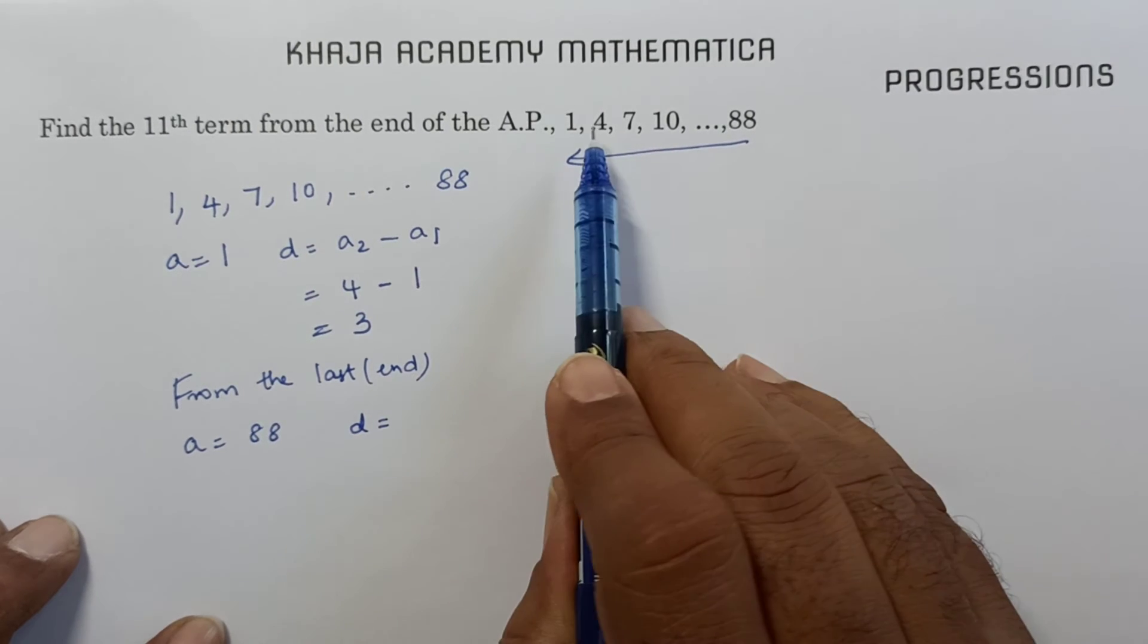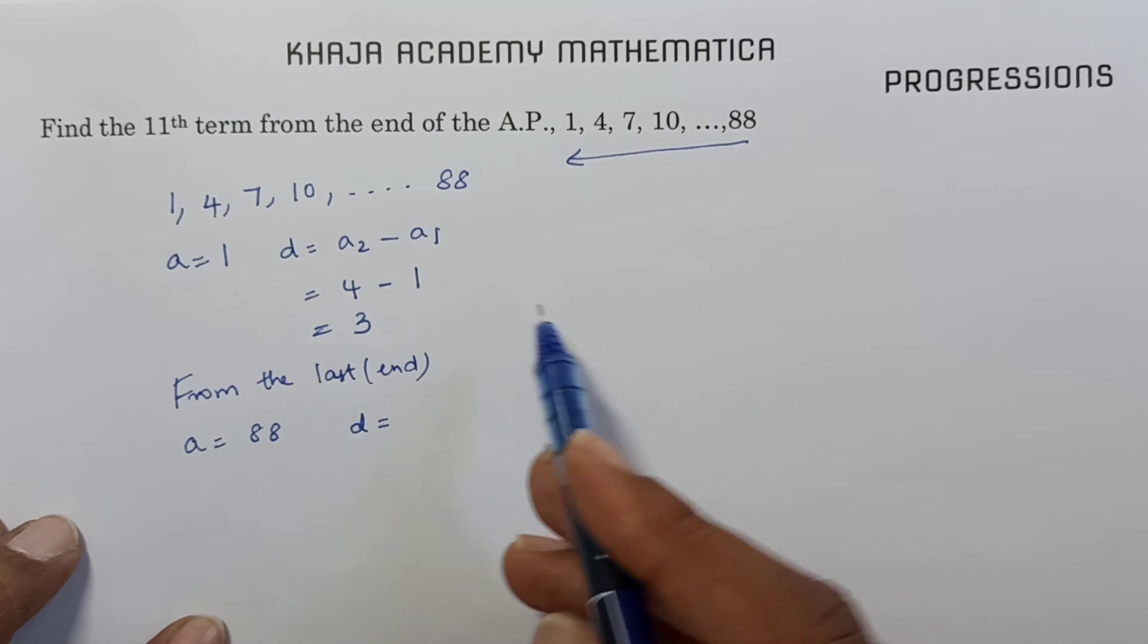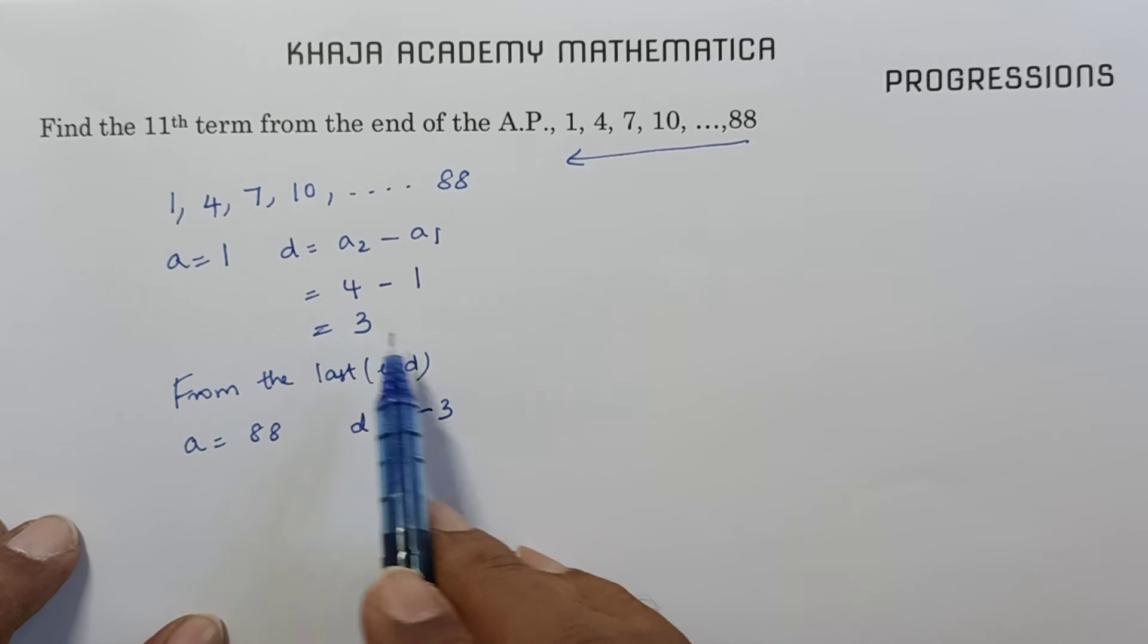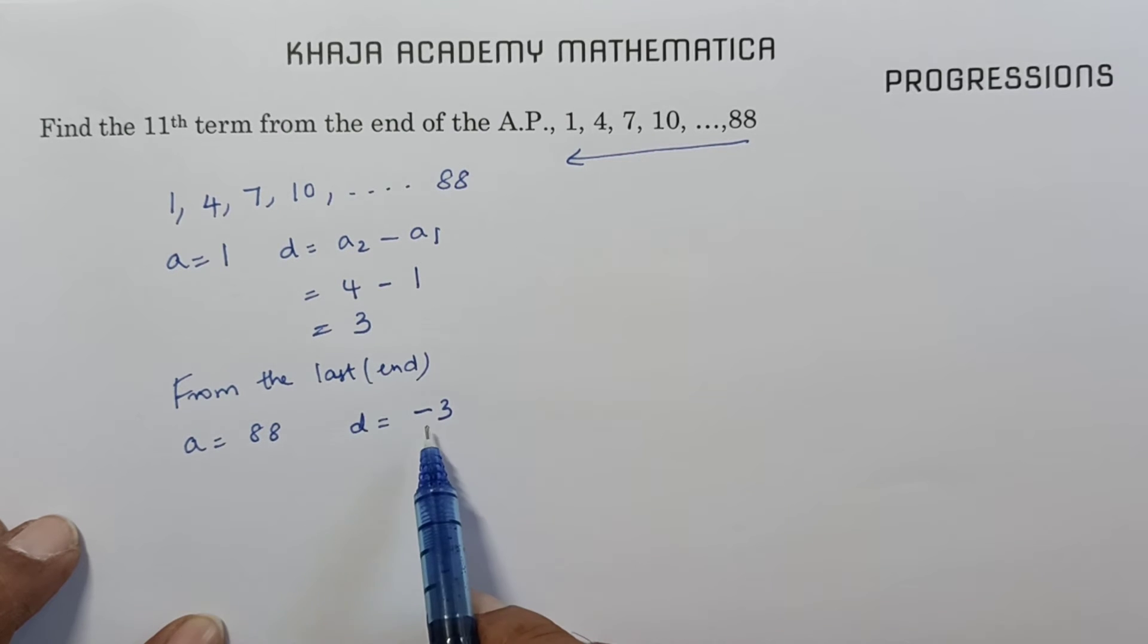And common difference, if we take the series in this order, is 3. But if we come in reverse order, it will be minus 3. If it is minus here, you will get plus. If it is plus, you will get minus. So you got D and A.